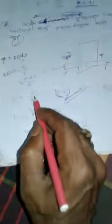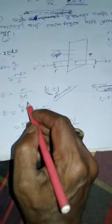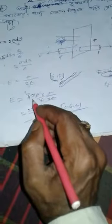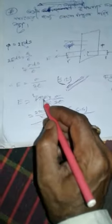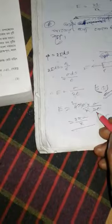And e is equal to sigma by 2 epsilon ds. If you do this, you will see 4 pi epsilon is equal to sigma by 2 epsilon ds. If you do this, you will see 2 pi sigma by 2 epsilon ds is equal to sigma by 2 epsilon ds.